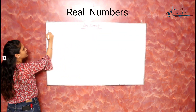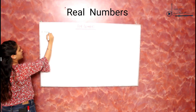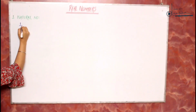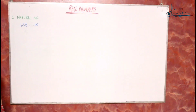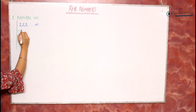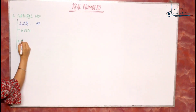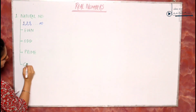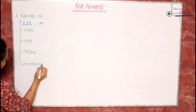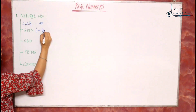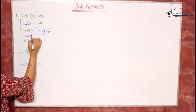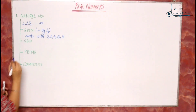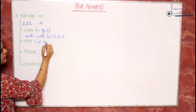First, natural numbers. We all have a basic idea of what natural numbers are. Natural numbers start from 1, 2, 3 and up to infinite. In natural numbers we have even numbers, odd numbers, prime numbers, and composite numbers. Even numbers are the numbers which are divisible by 2, or you can say the numbers which end with 0, 2, 4, 6, and 8.